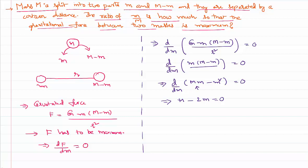Differentiating this: capital M minus 2m equals zero. The differentiation of capital M times small m gives capital M, and the differentiation of m squared equals 2m, since we have the formula differentiation of x to the power n equals n times x to the power n minus 1. So differentiation of m squared is 2 times m.